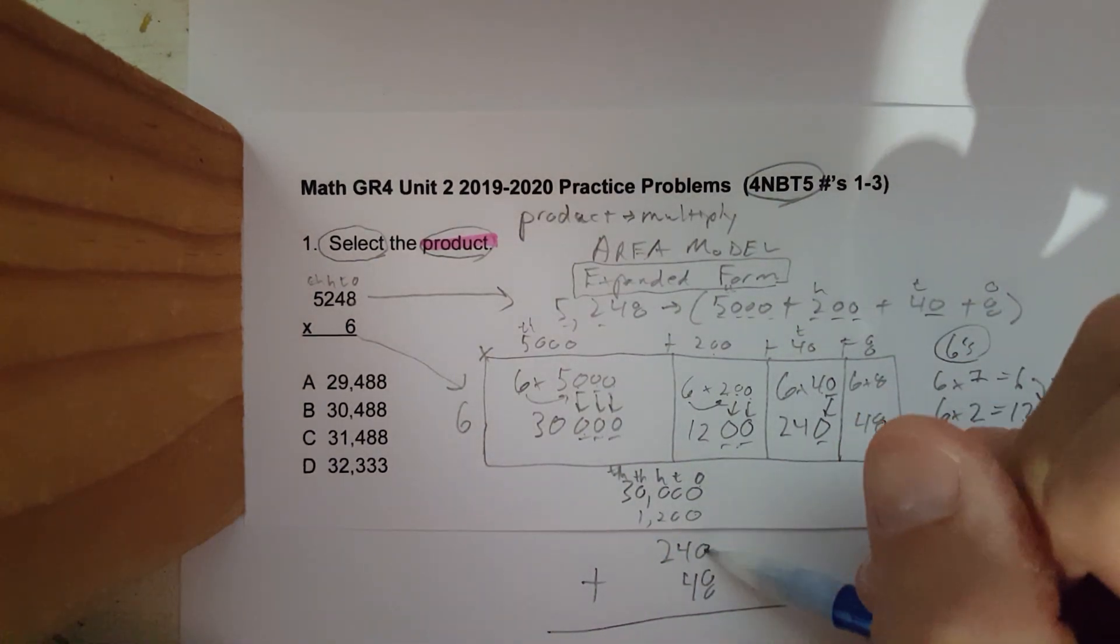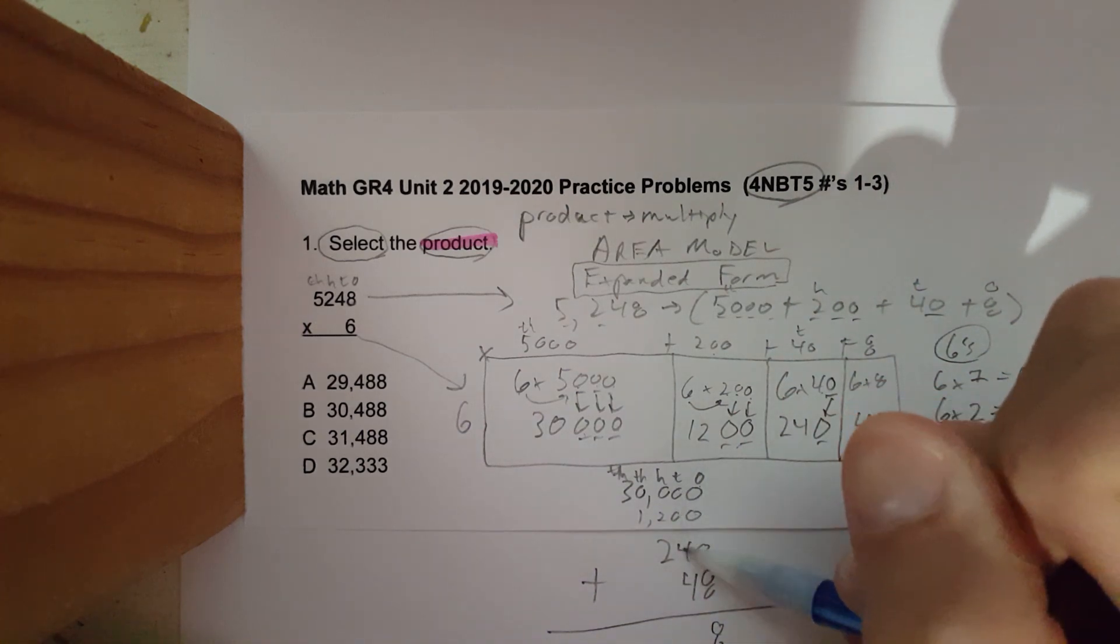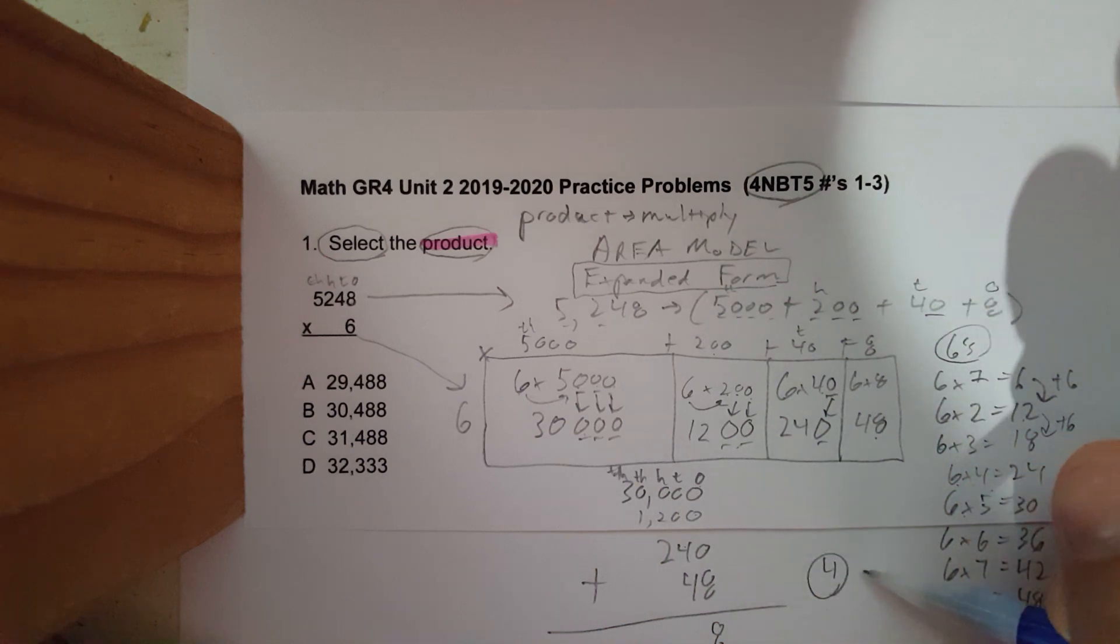Please make sure you line up the digits correctly in the ones, tens, hundreds, thousands, ten thousandths place. Zero plus zero plus zero plus zero is eight. Plus eight is eight. Zero, zero, four, four.